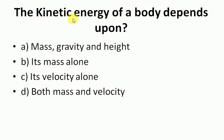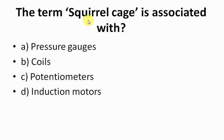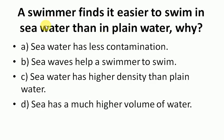The kinetic energy of a body depends upon mass and velocity. The term squirrel cage is associated with induction motors. A swimmer finds it easier to swim in sea water than in plain water because sea water has a higher density than plain water.